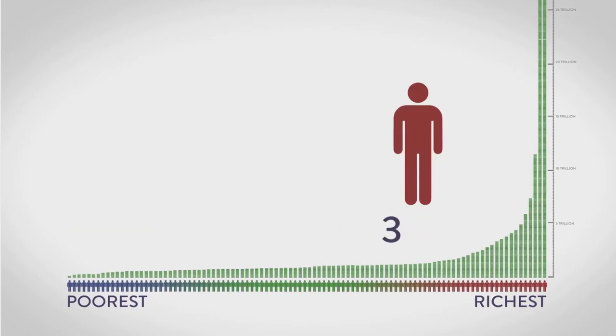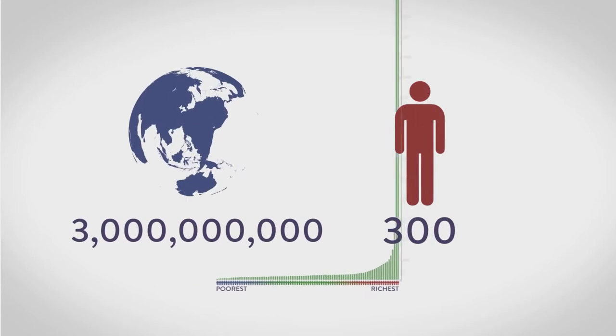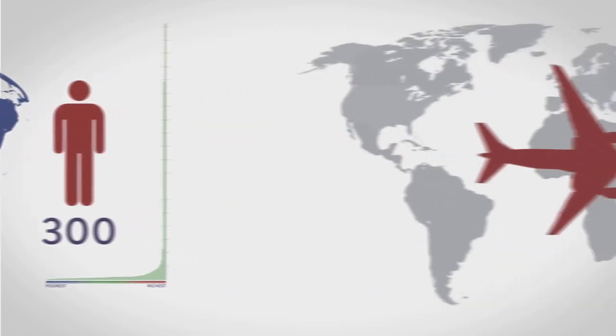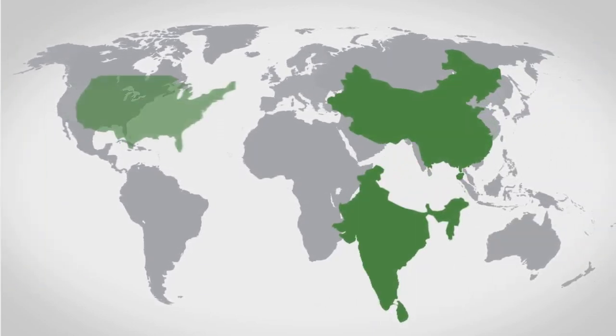The richest 300 people on earth have the same wealth as the poorest 3 billion. So the number of people it takes to fill a mid-sized commercial aircraft have more wealth than the populations of India, China, the US,